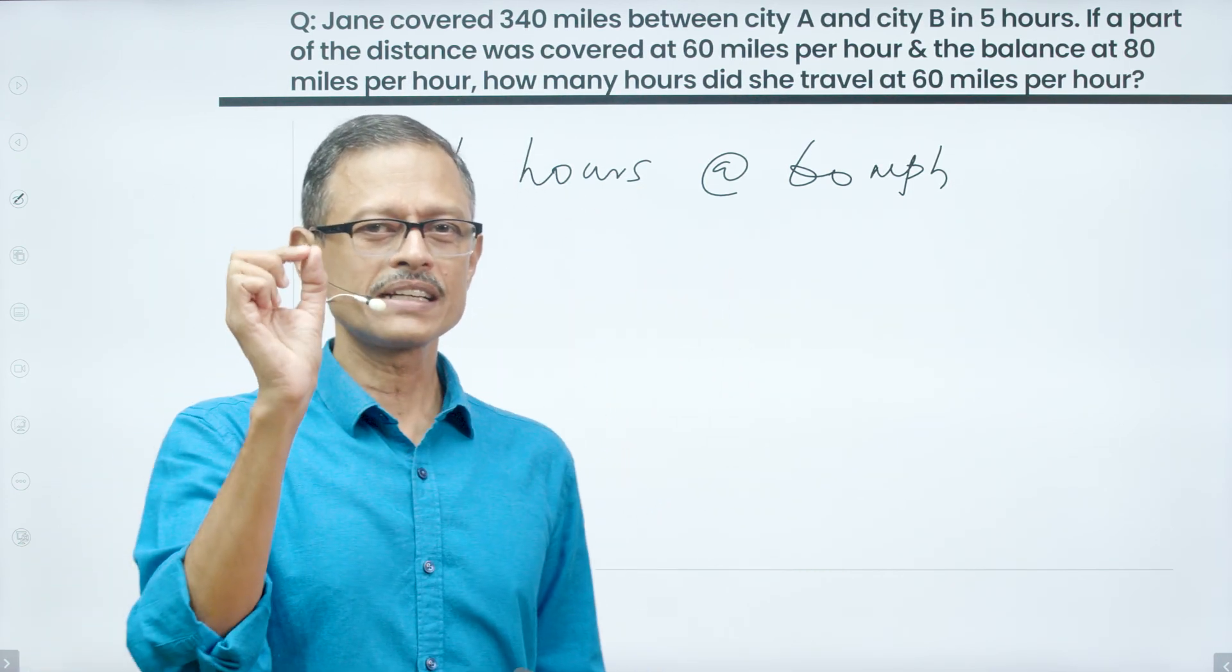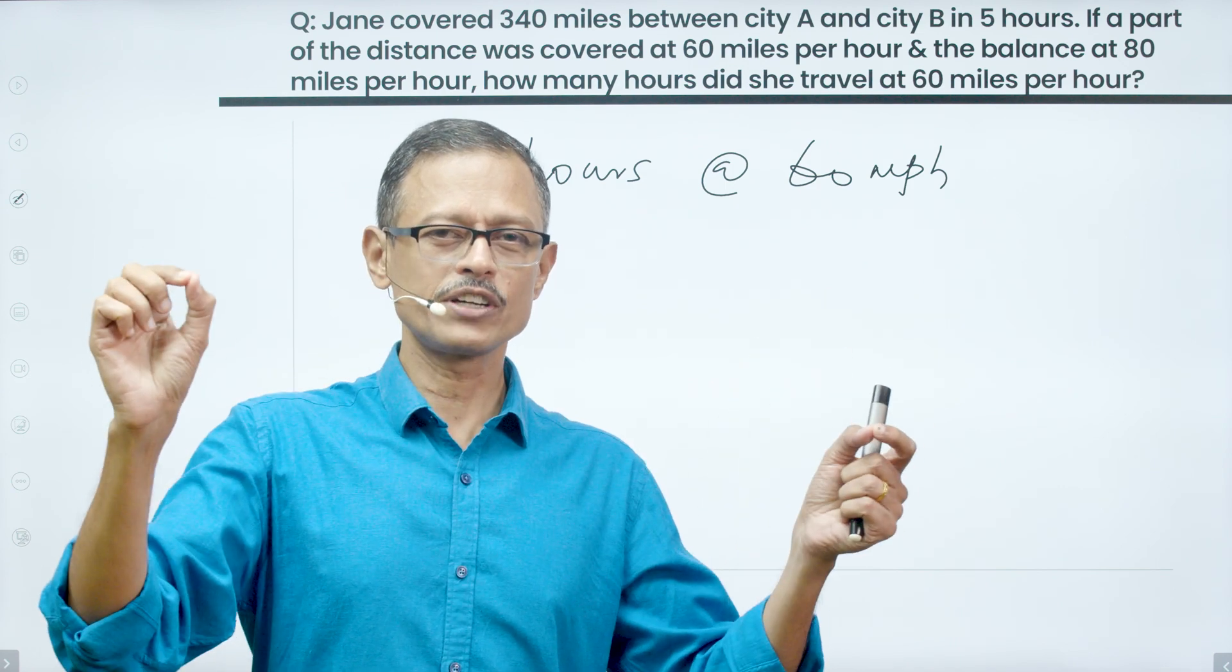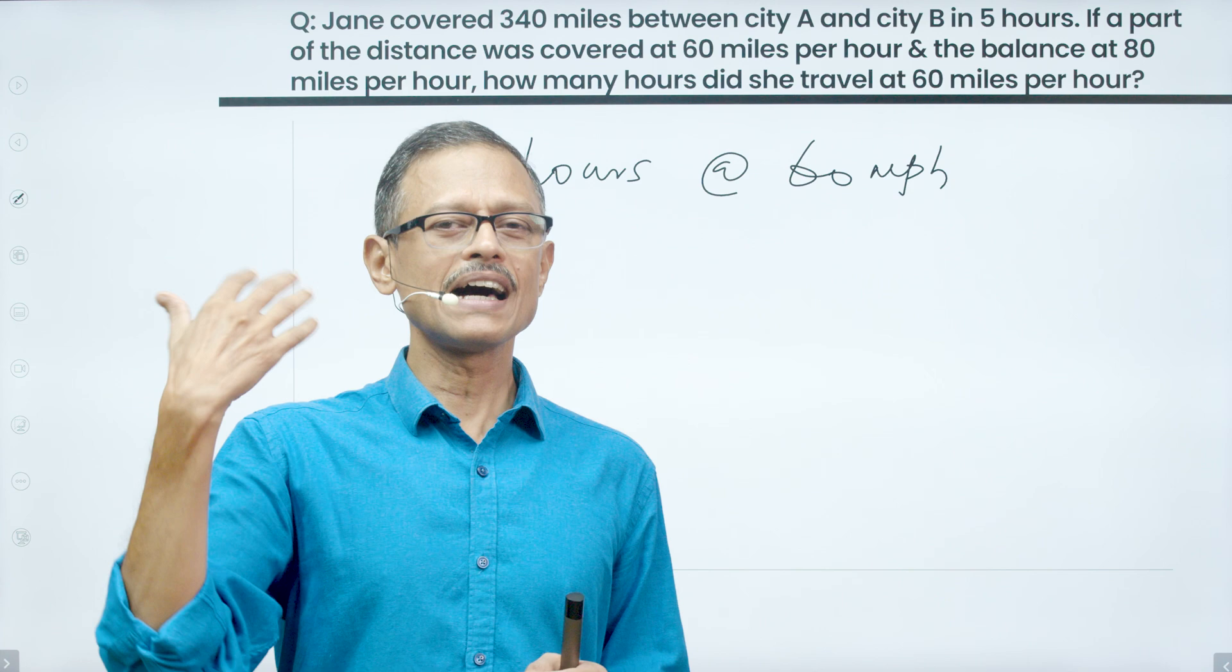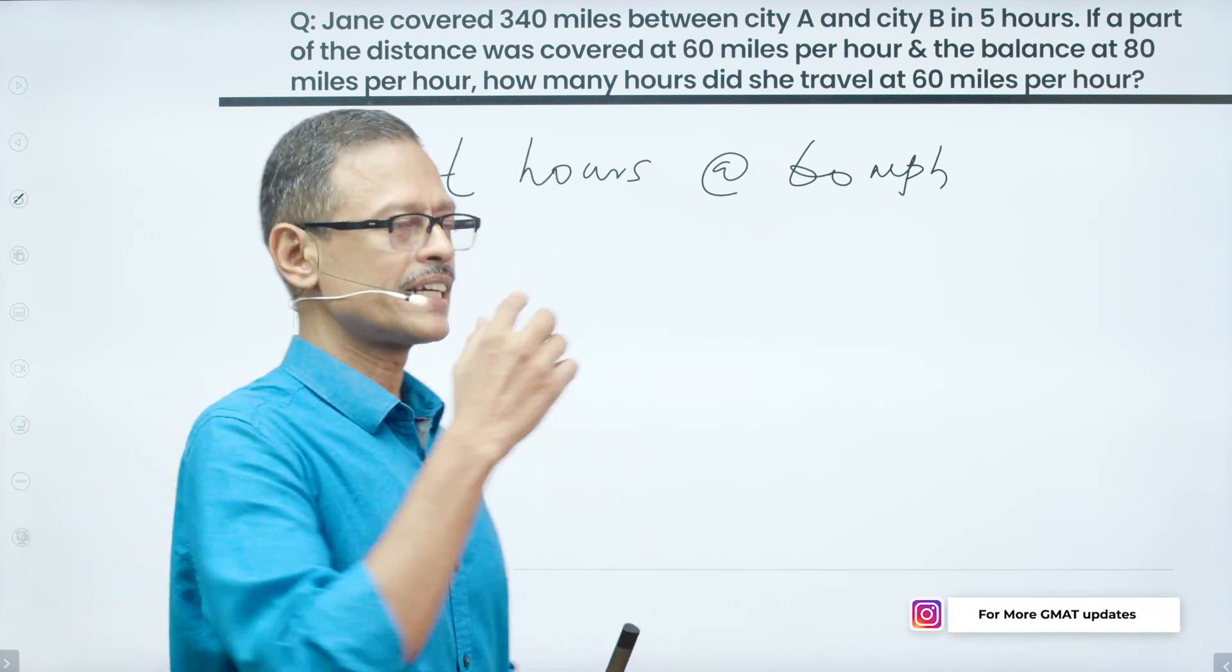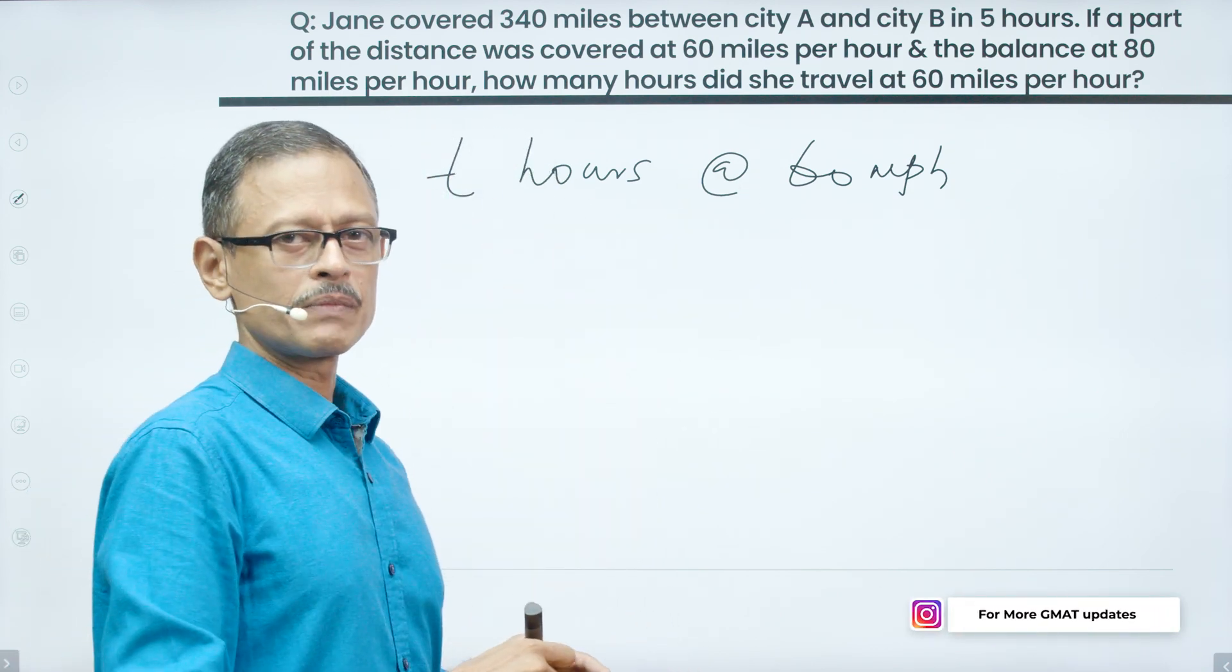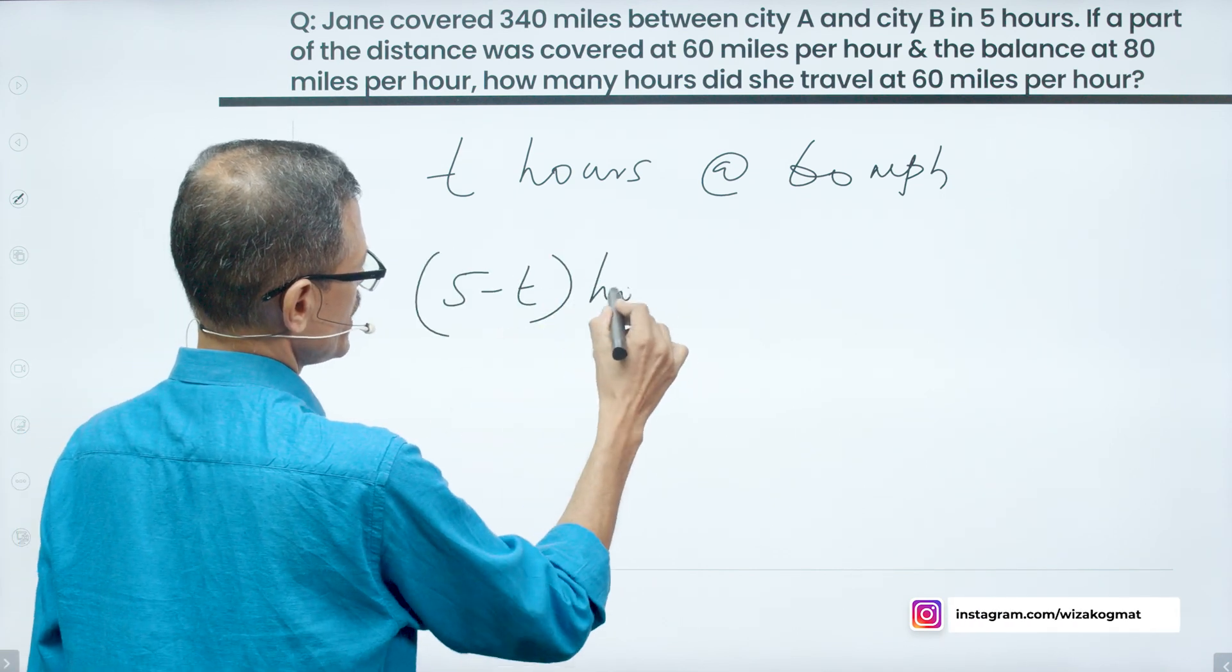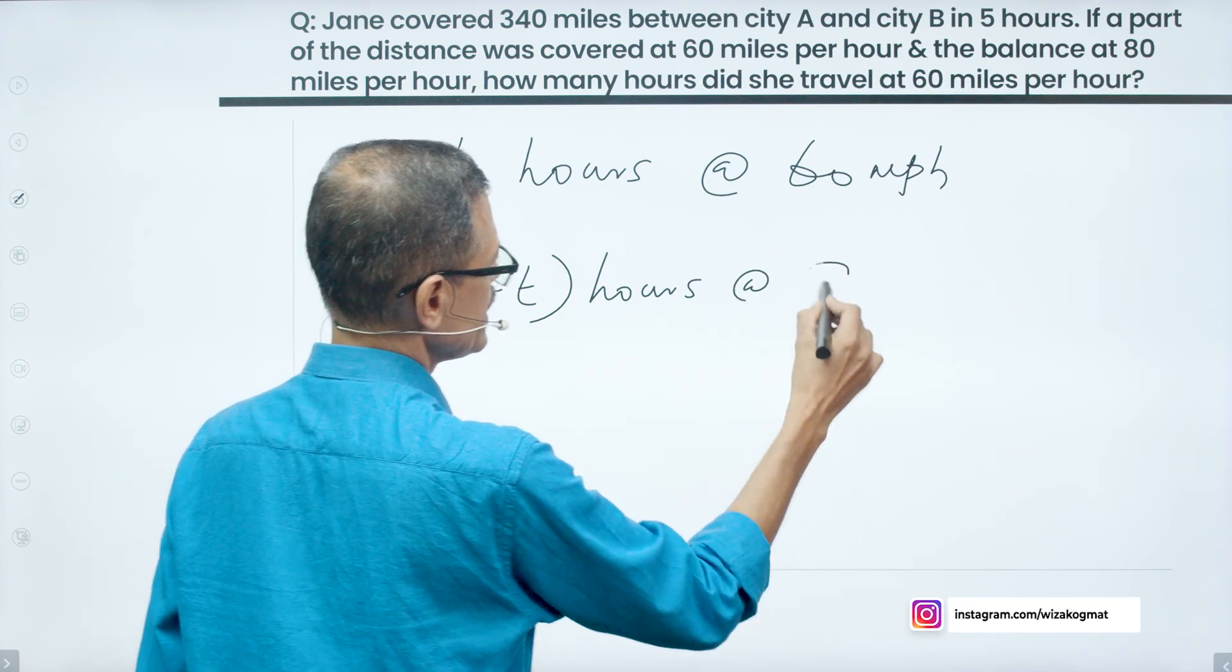Let's say this is 1 hour. Total time taken to travel the entire 340 miles is 5 hours. So if 1 hour was traveled at 60 miles per hour, the balance 4 hours should have traveled at 80 miles per hour. She traveled T hours at 60 miles per hour. So the balance 5 minus T hours is what she is going to be traveling at 80 miles per hour.